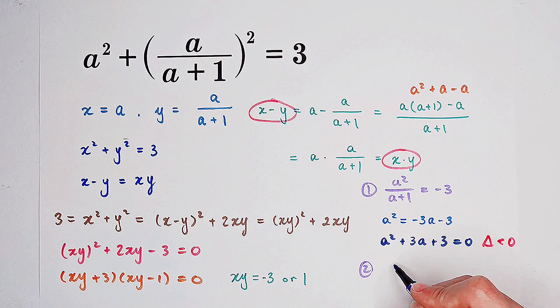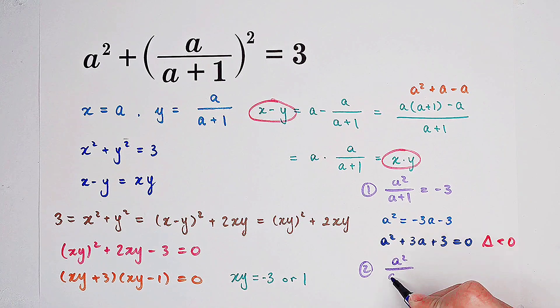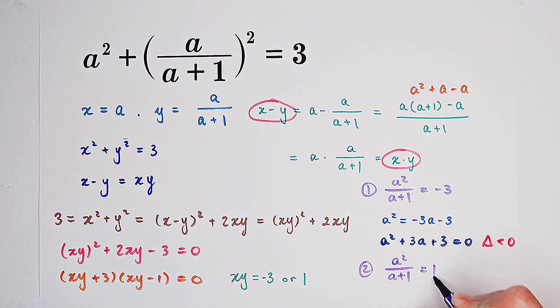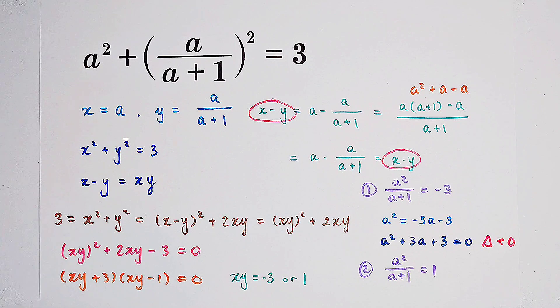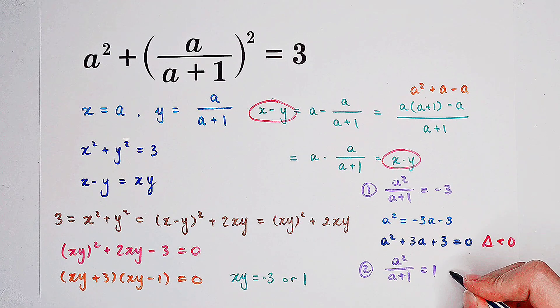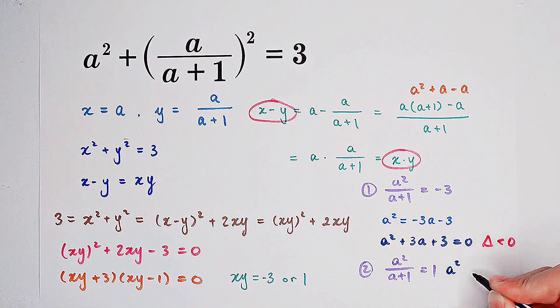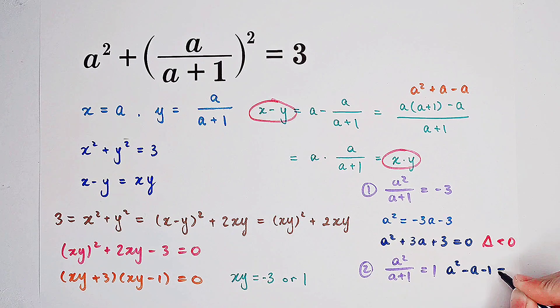In our second case, we get a squared over a plus 1 equals 1. And this will lead to another equation: a squared minus a minus 1 equals 0.